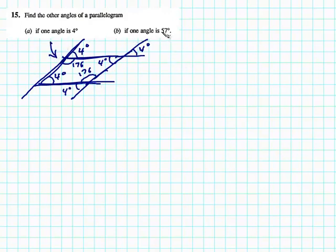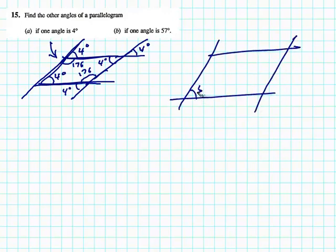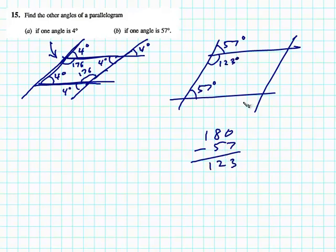But if one of the angles is 57, it's the same general idea. Say this is 57 degrees, then this is 57 degrees because those are corresponding angles when you have two parallel lines here. Subtract from 180, this is 123 degrees.